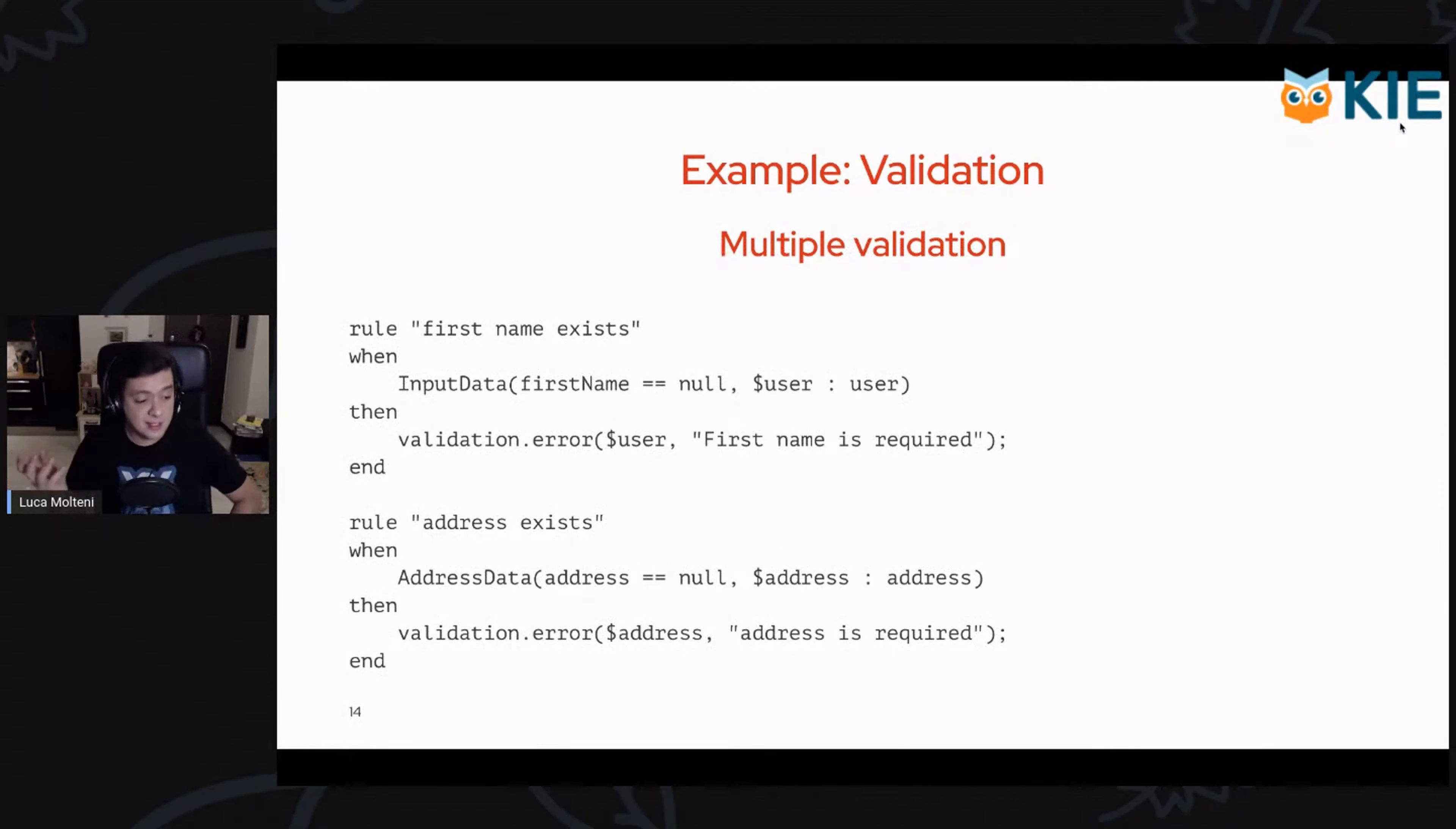For example, we have multiple validation. In this example, we are validating two different Java types. The first one is input data, and the second one is address data, maybe another detail of the user inserting their own address. They're very similar. We are validating whether the first name is null and the address is null.